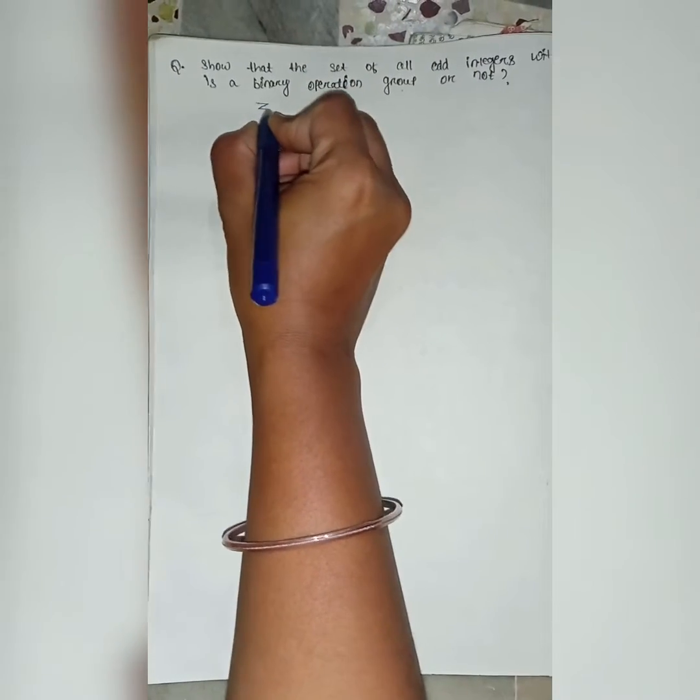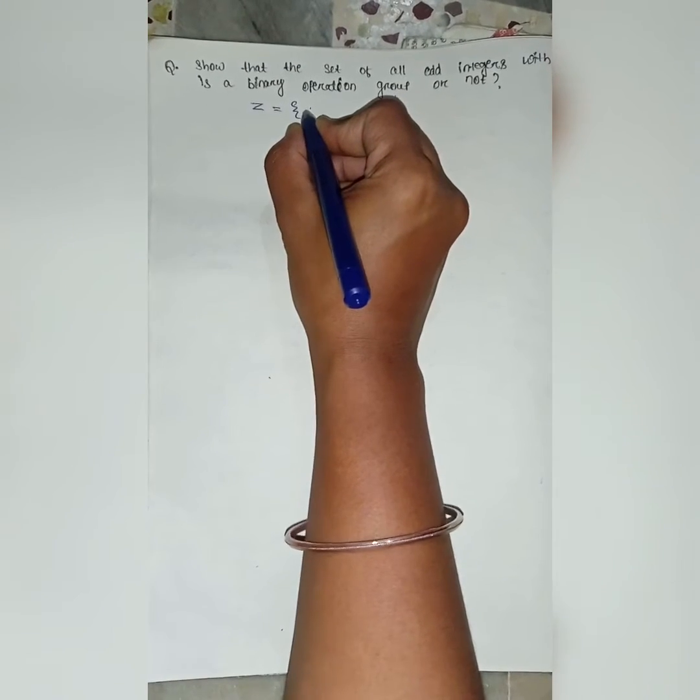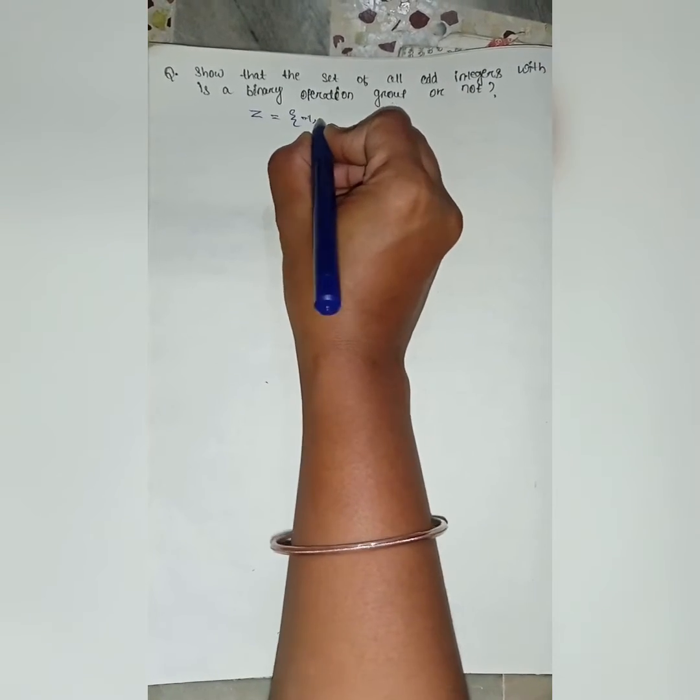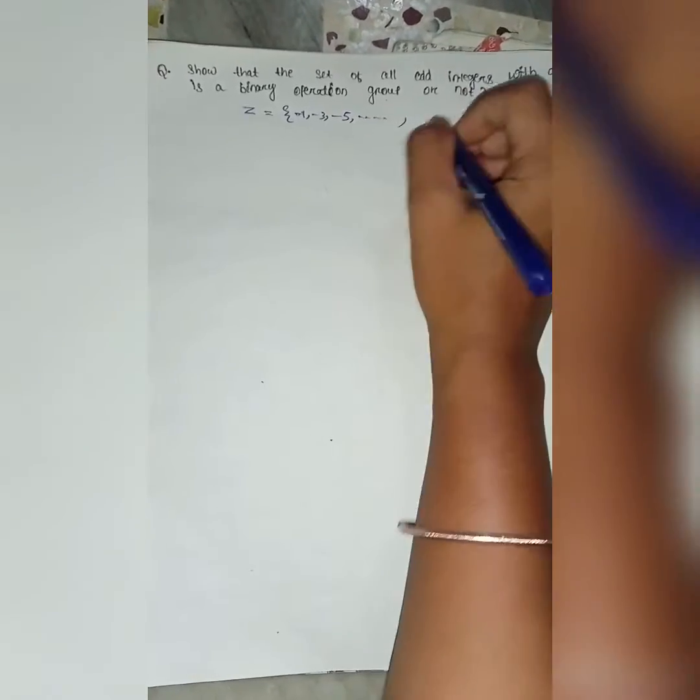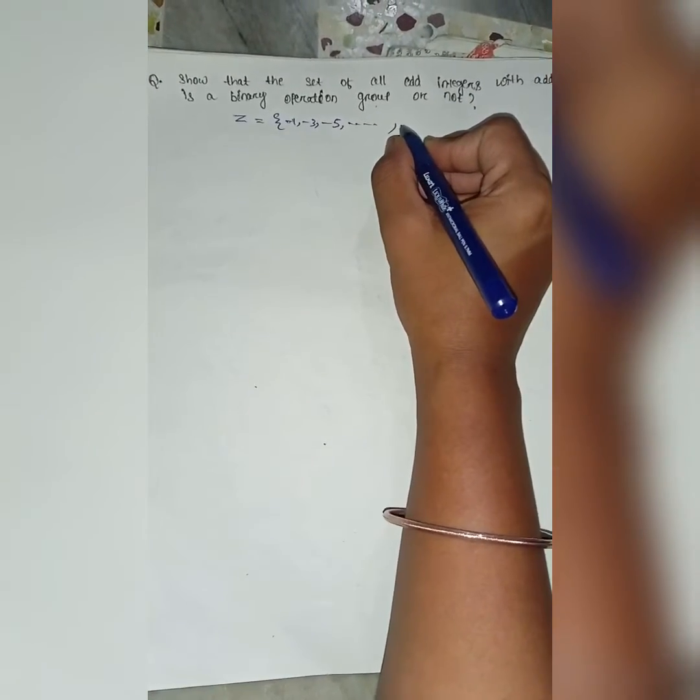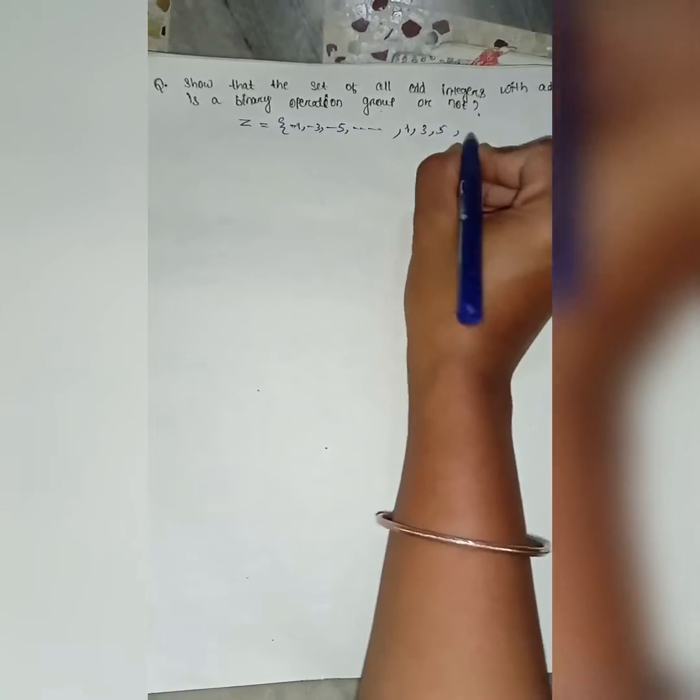Let z be the set of all integers. It means what? Odd integers means minus 1, minus 3, minus 5. It is set as like 1, 3, 5, dot, dot, dot.